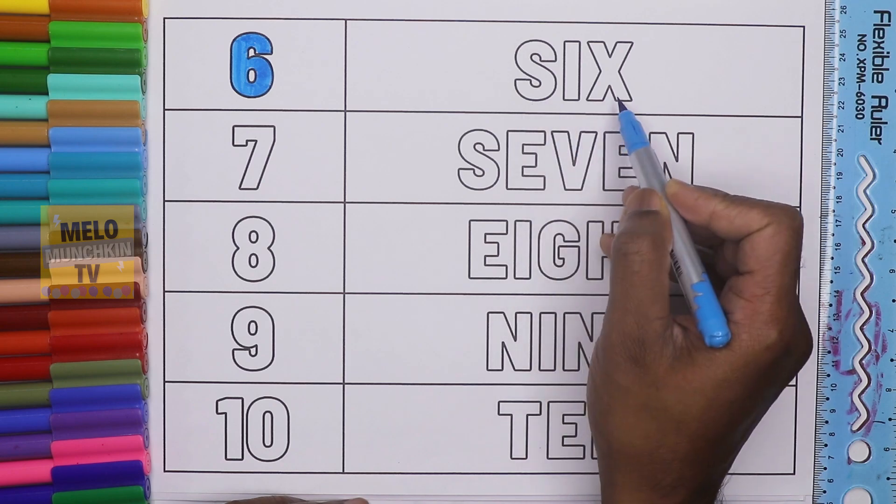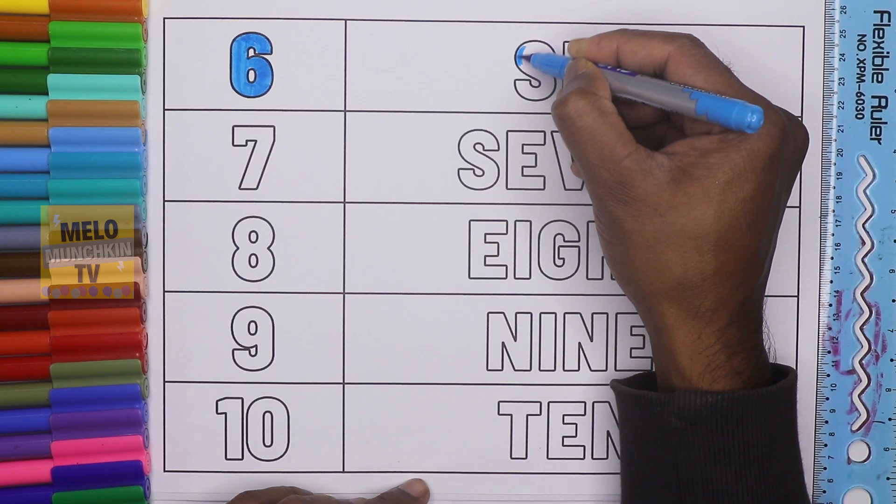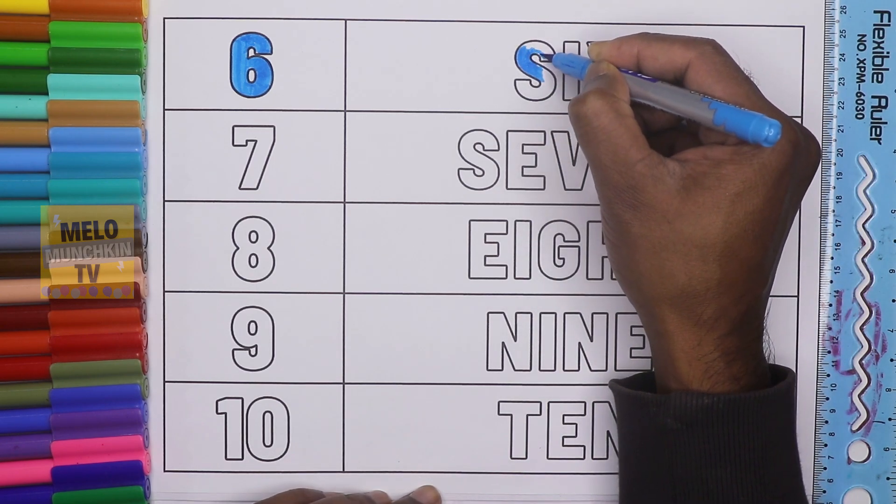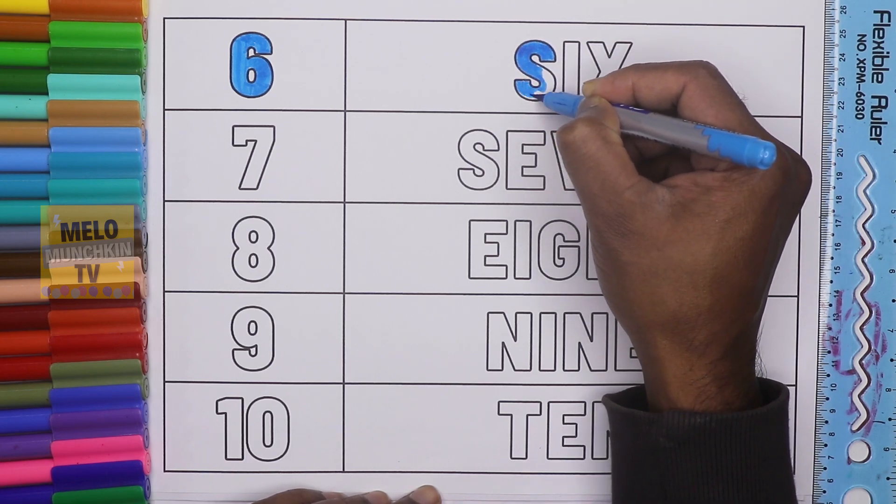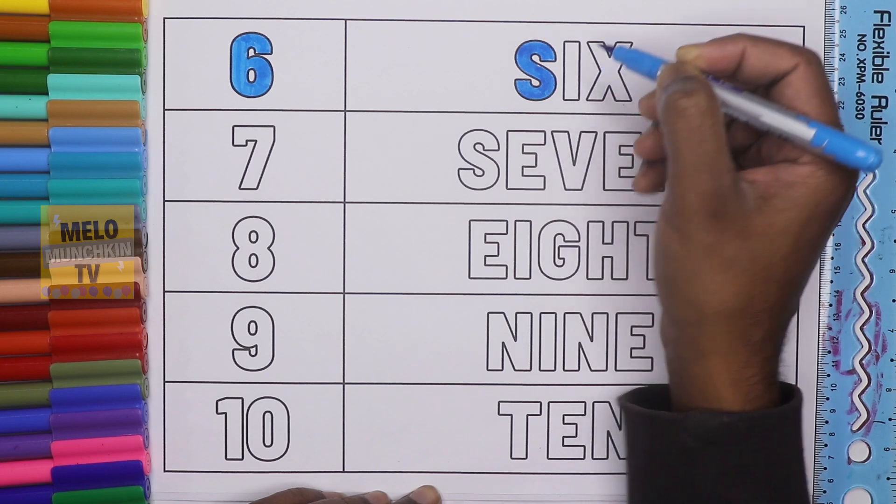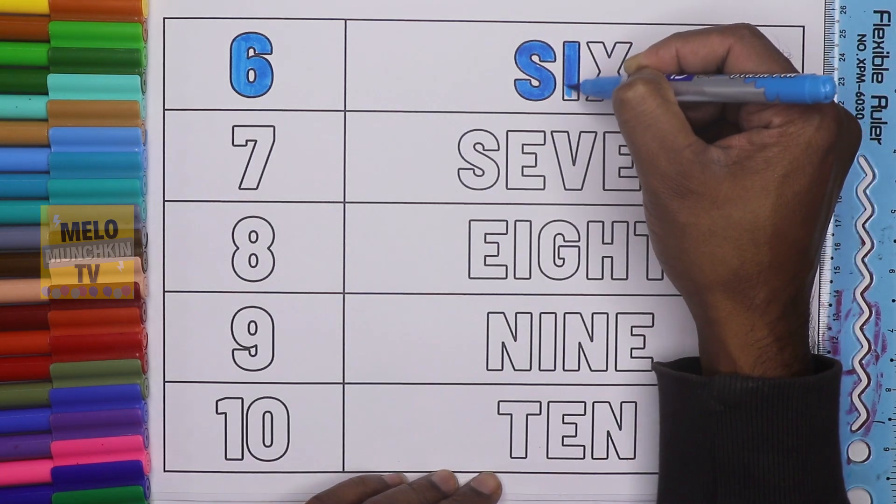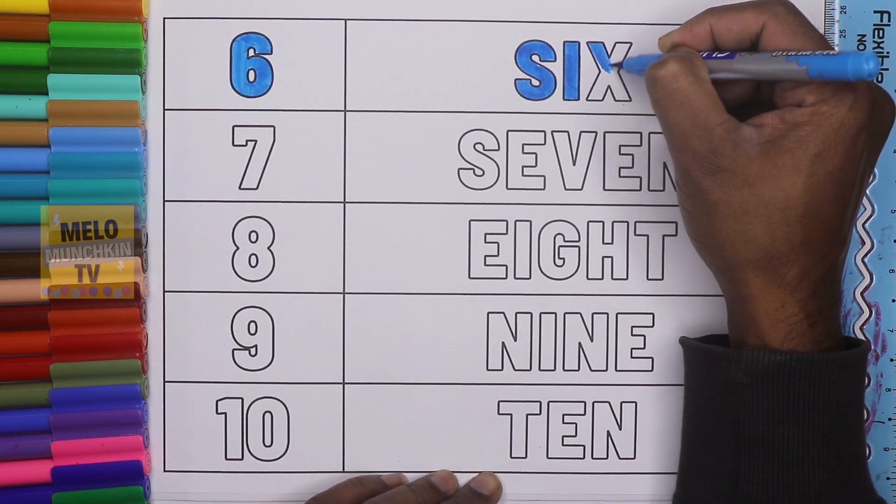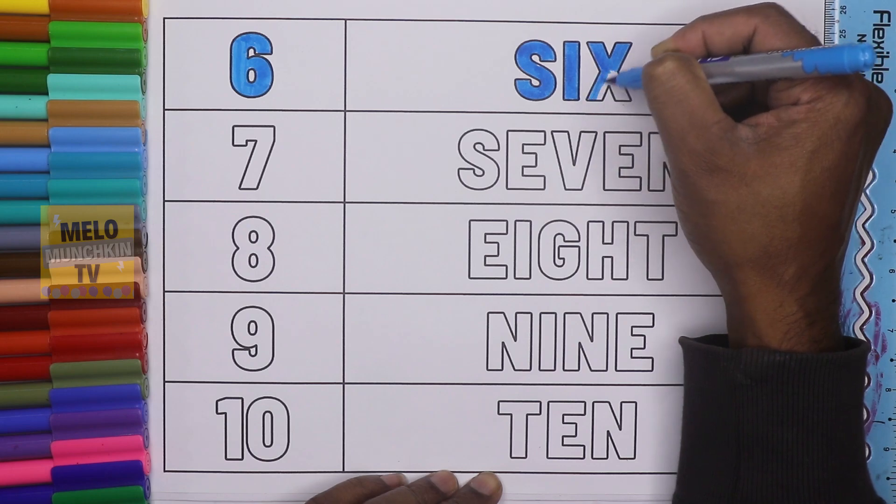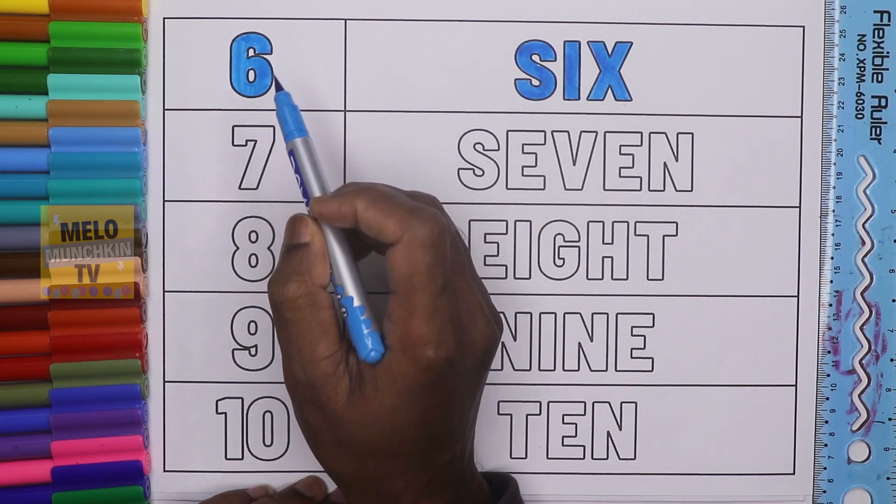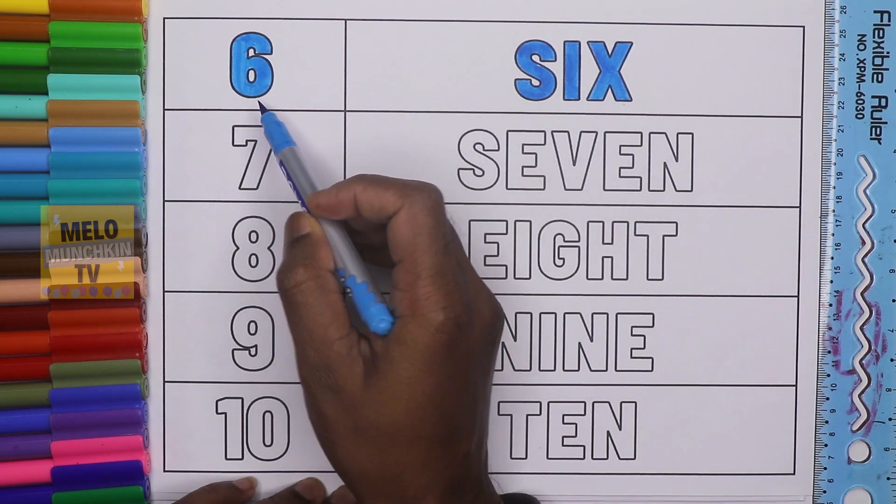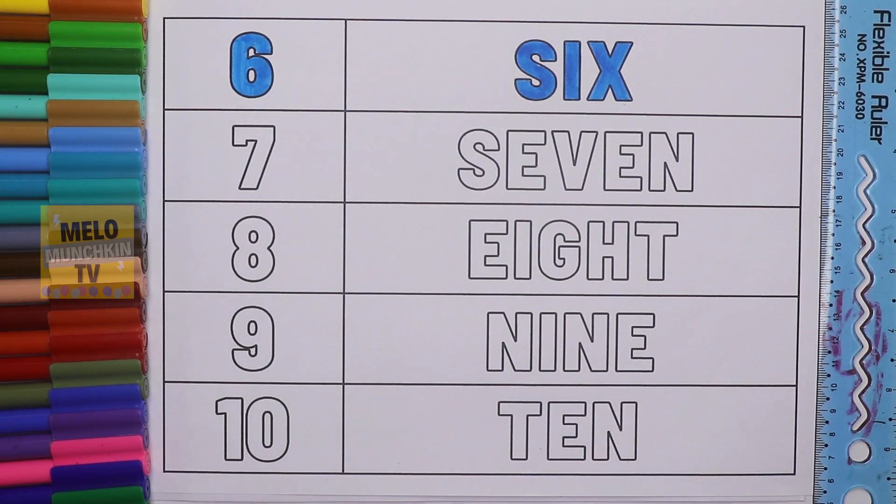This is number 6. What is the spelling of 6? S-I-X. 6. Let's color this. S-I and this one is X. 6. So this is number 6, S-I-X, 6.